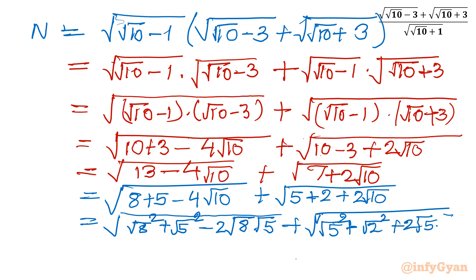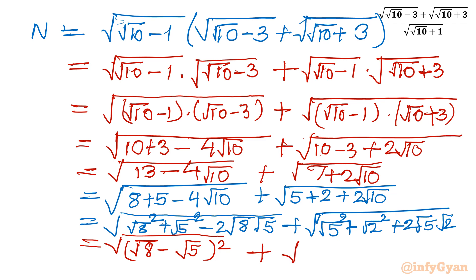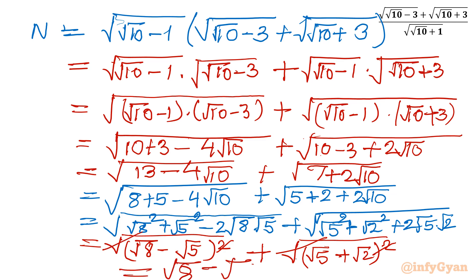For the second radicand 7 plus 2√10, I write it as (√5)² plus (√2)² plus 2 times √5 times √2. So the first radicand becomes (√8 minus √5)², and the second becomes (√5 plus √2)². Taking square roots and cancelling: the numerator becomes (√8 minus √5) plus (√5 plus √2). The plus √5 and minus √5 cancel out, leaving √8 plus √2.